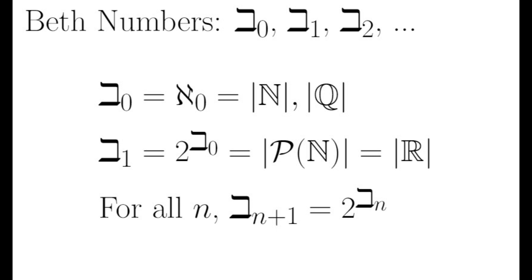Apply the power set operation again, and we have Beth 2, which is 2 to the Beth 1. And in general, Beth n plus 1 is equal to 2 to the Beth n.